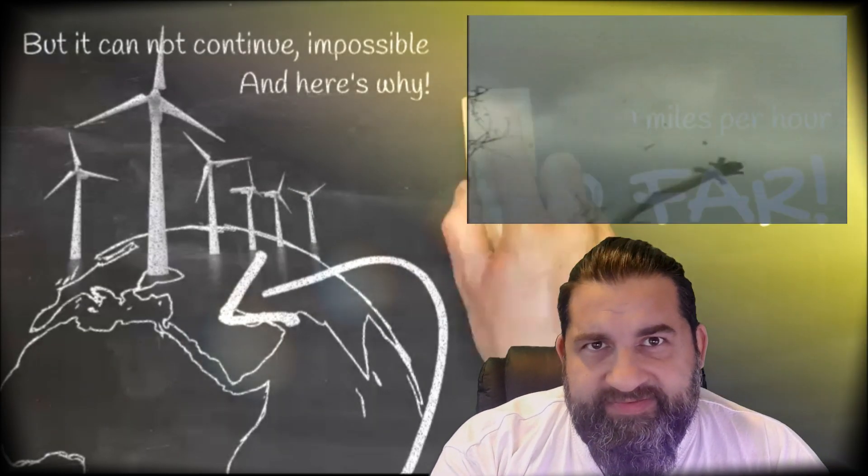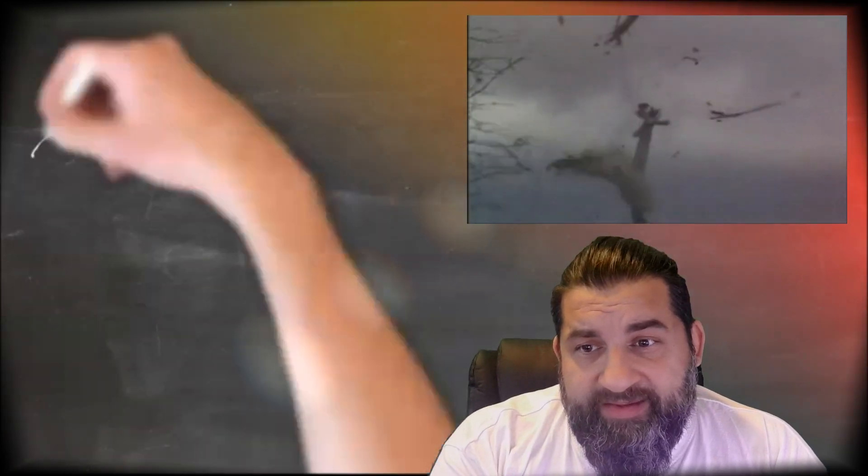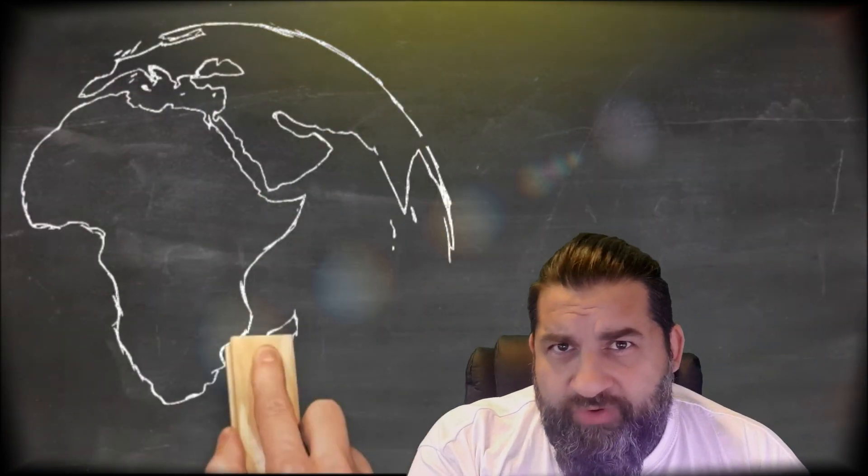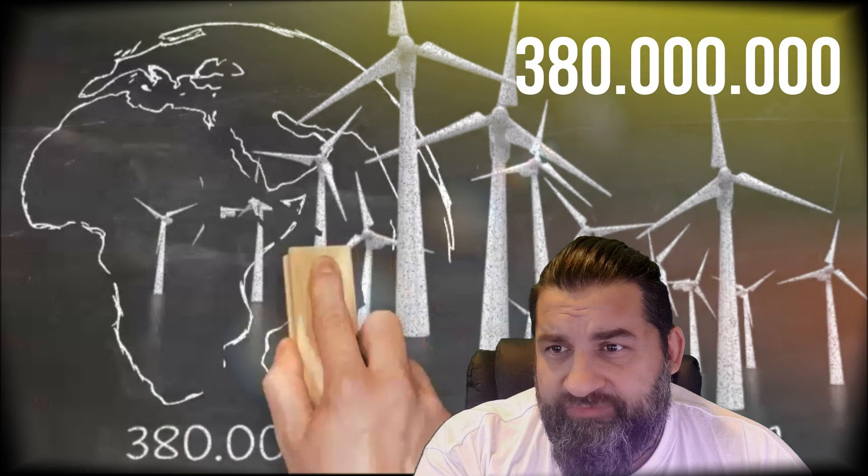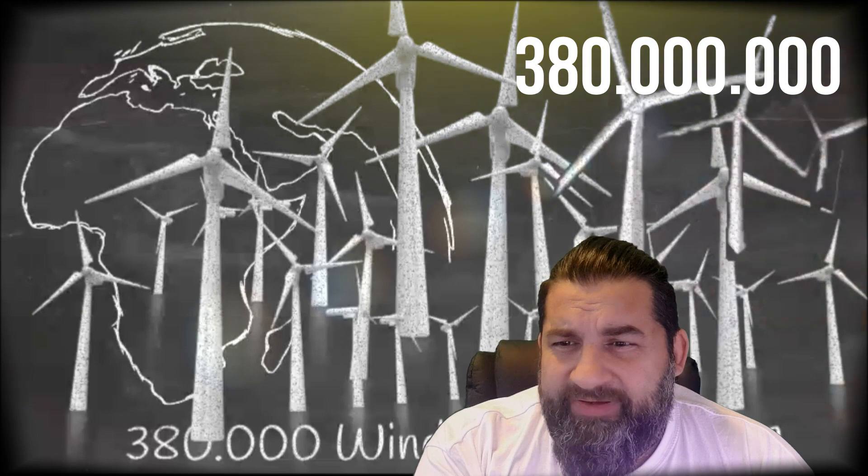The windmills, the wind turbines, they are getting bigger and stronger and more powerful and it's going against the wind as you know, otherwise it wouldn't have any effect. So in this year 2021, there will be 380,000 windmills in the world. It's insane but it's true.